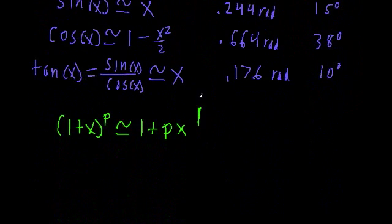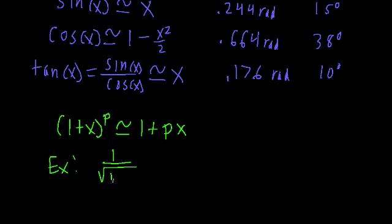So, as just a quick example, we can say that the function 1 over radical 1 plus x, we can rewrite this as just 1 plus x to the negative 1 half.